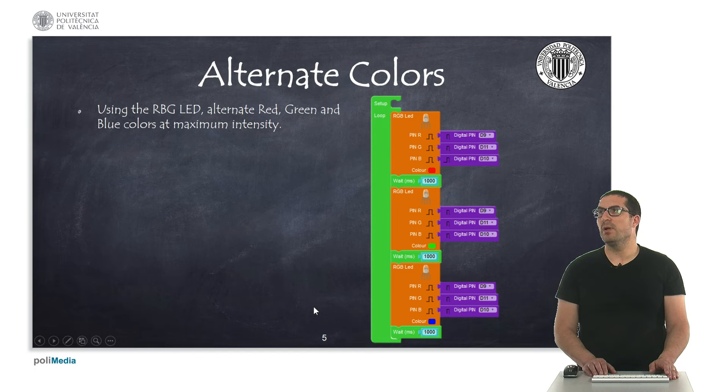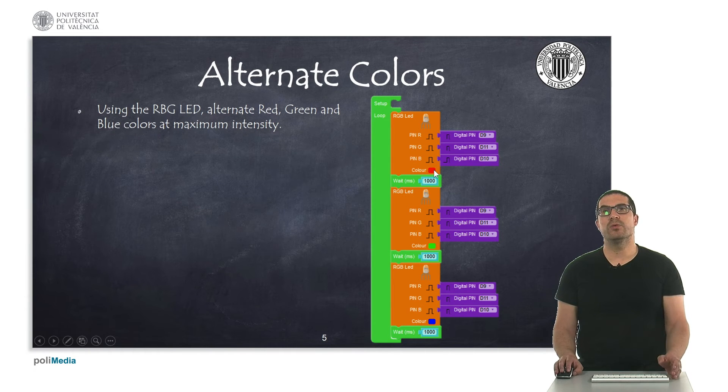In this first example, what we're doing is using the RGB LED instruction, so we can select the color here and we can choose whatever color will be listed. And then we specify the pin numbers where the RGB LED is connected to.